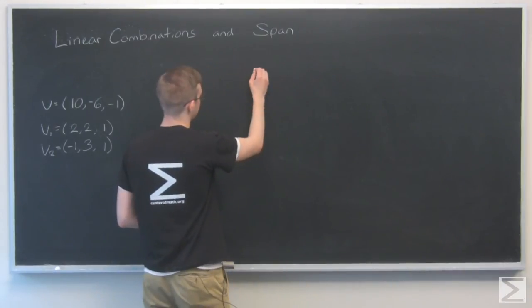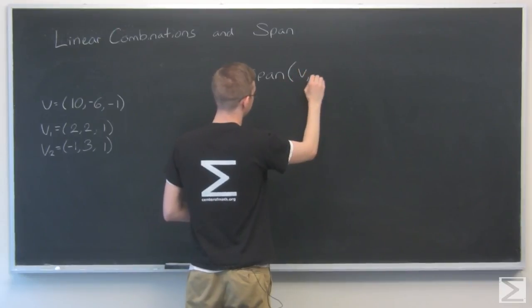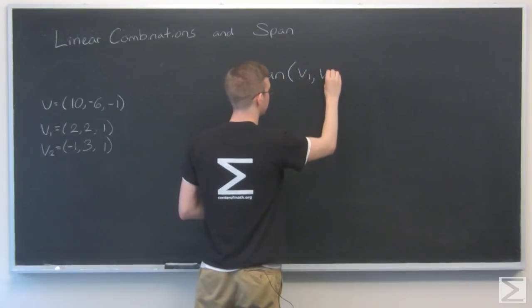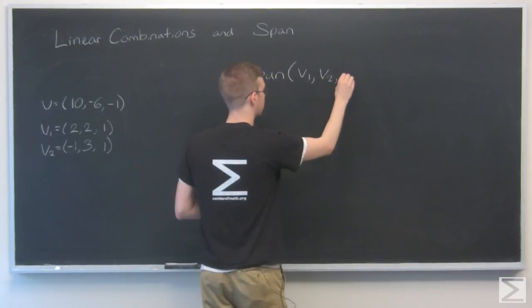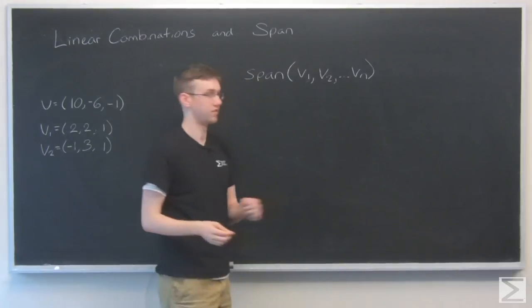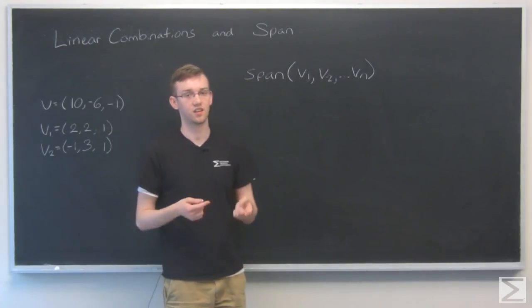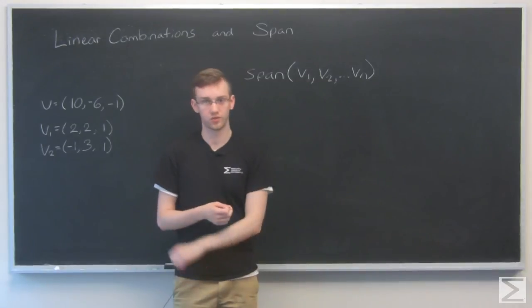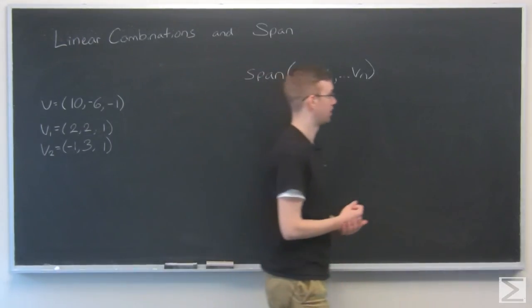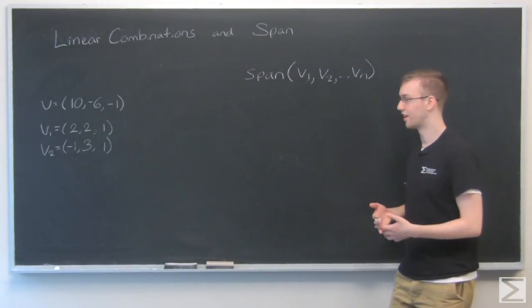And we denote it like this, just span v1, that's a comma, v2, vn. And that's just every possible vector that you can get by adding and subtracting multiples of any of these vectors. It's a pretty simple concept, but has some pretty big implications.